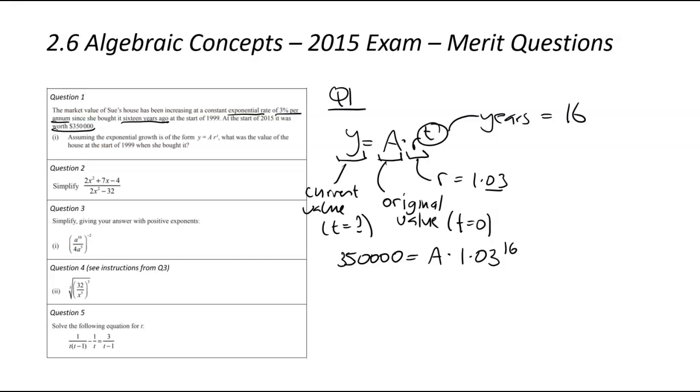We're now going to substitute what we know. So the current value, we have been told that is $350,000. So $350,000 is going to be equal to a times 1.03 to the power of 16.